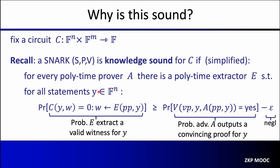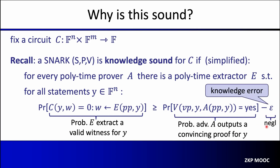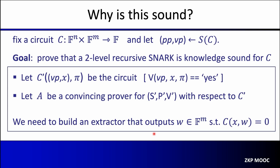We'd like to prove that our two-level recursive SNARK is knowledge sound for circuit C. Let C' be the circuit used by the outer system — it runs the verifier of the inner system using pi as a witness. If A is a convincing prover for the outer system S', P', V' with respect to C', what we need to build is an extractor that doesn't just extract pi, but actually extracts a witness for the original circuit C.